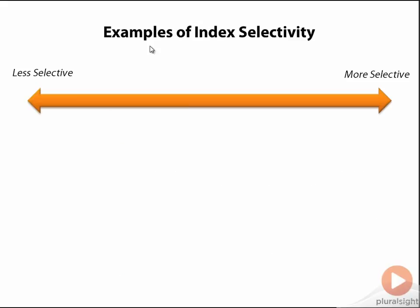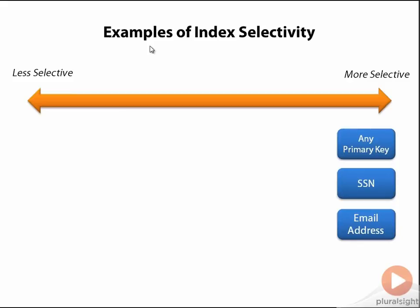Sometimes it's easier to understand a concept by having a couple of examples to consider, so let's do that with selectivity. The most selective indexes are indexes that are unique, so any primary key is a very selective index. Other examples include things like social security numbers or email addresses. We expect that these are going to be distinct for every row in the table, and in fact we might even have unique indexes on these columns to prevent two instances of a user from having the same email address or social security number. We also have a column like phone number, which may contain a few duplicates due to the same phone number being reissued over time, but generally is very unique.